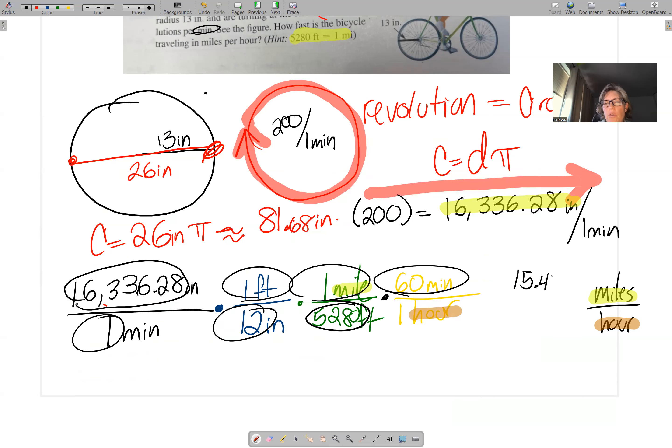15.47 miles per every hour. If you take a look, the way I set it up is that the inches cancel, minutes cancel, the feet cancel, so that you're only left with miles per hour. And then in real life problems, this should make sense. 15 miles per hour is probably about normal for a bicycle. If that was 150 miles per hour, then there would be another discussion. So it's a good idea just to take a step back and ask, is this reasonable? Is this logical?